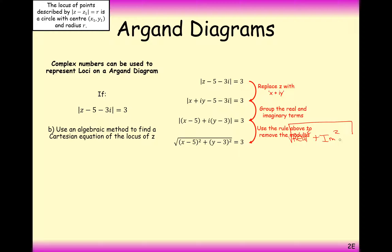Just note — we lose the i here. Some people might accidentally go wrong by squaring the i; we're not going to do that. We just square the imaginary part, not the imaginary unit i as well. Then square both sides of the equation, and we get our answer: (x-5)² + (y-3)² = 9. That's the equation of the locus of z.